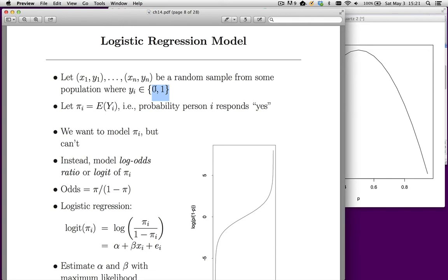So spam, not spam, cancerous, benign, and so forth. Now, let's say that πᵢ is going to be the expected value of y, which means that it's really the probability that subject i is a yes. So subject i could be an email, could be a tumor. πᵢ is the probability of a yes.